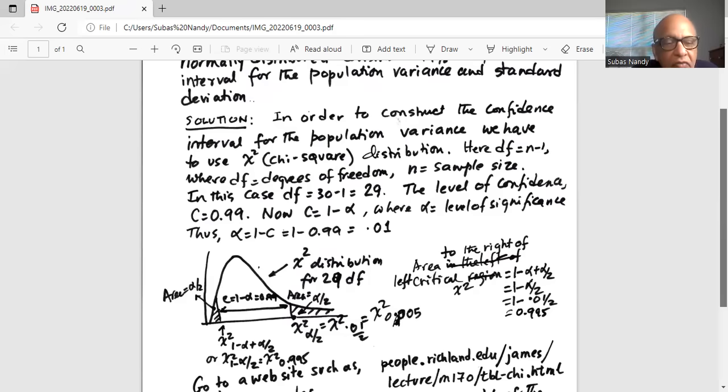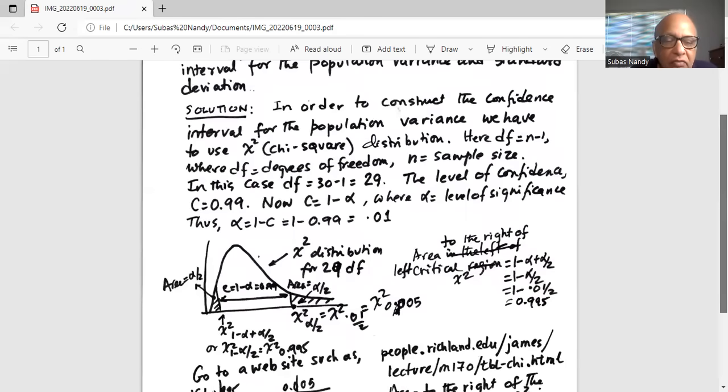Alpha is 0.01, so alpha by 2 is 0.005. Hence, 1 minus alpha by 2 is 0.995. So the left tail critical value of chi-square is chi-square 0.995, where 0.995 indicates the area to the right of that critical value.